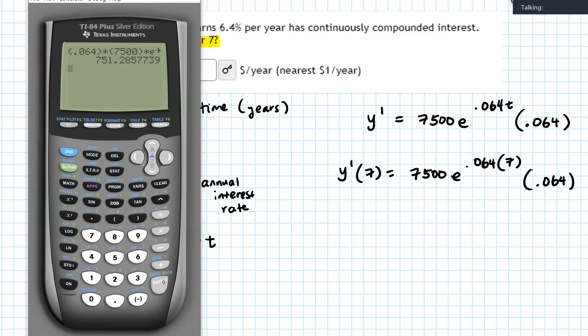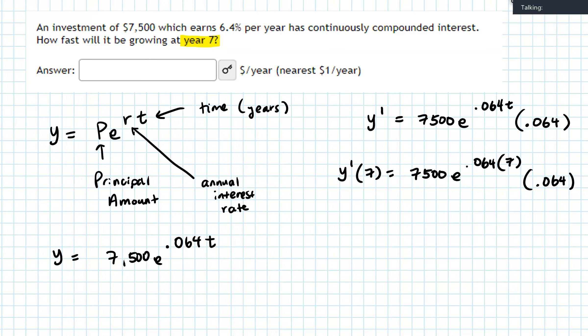So I'm going to round that to the nearest dollar, because that's what it says in the answer box to the right. It says nearest dollar per year, so 751. So how fast will it be growing at year 7? It will be changing at a rate of 751. The units are already here for us, dollars per year.